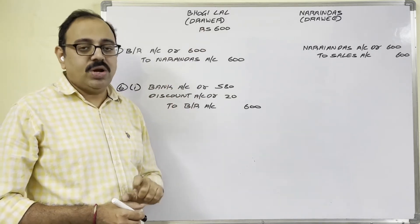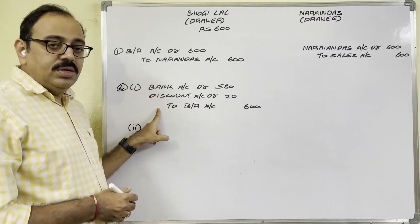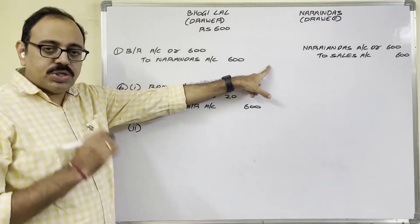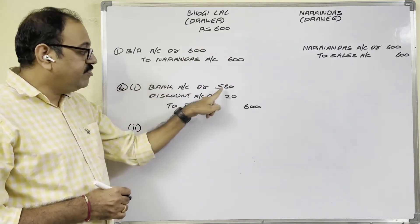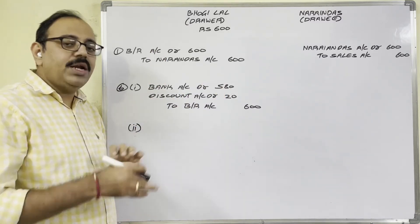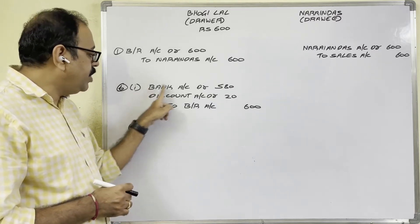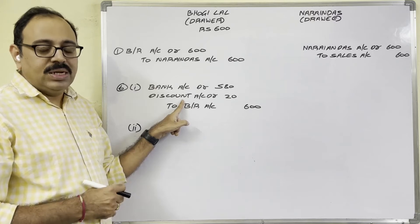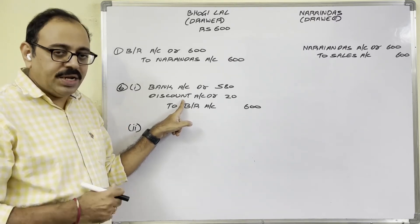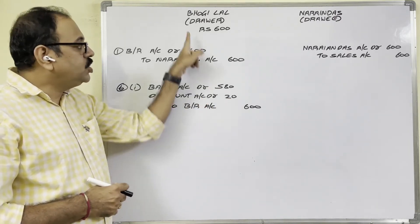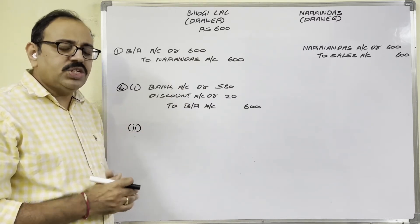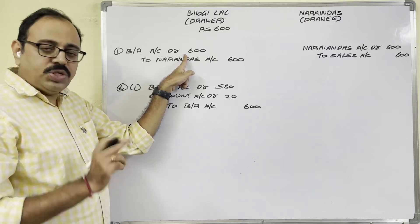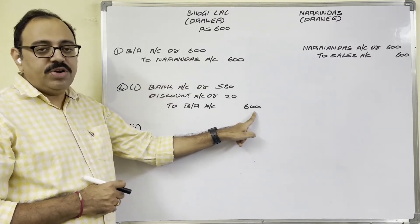Model B: when Bhoge Lal discounts the bill and on the due date the bill is dishonored. For discounting, the entry is: discounting means before the due date Bhoge Lal needs money, so he sold that bill to the bank. How much money did the bank pay? 580 rupees, deposited into his account. So bank balance is increasing — debit bank account with 580 rupees. He is losing 20 rupees as discount, which is a loss under nominal account rule, so debit discount account with 20 rupees. He sold the bill to the bank so bills receivable is no longer an asset — credit bills receivable with 600 rupees. This is the discounting entry explained in problem 2.